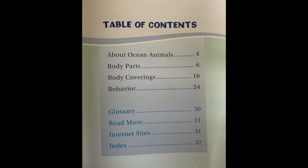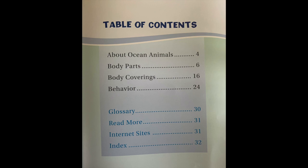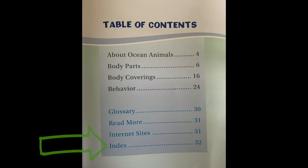The first topic is called About Ocean Animals, and you can find it on page four. Then the next part is Body Parts on page six. The next part is Body Coverings on page 16. And the last topic is called Behavior on page 24. And look boys and girls, I see other non-fiction text features — there's a glossary on page 30 and an index on page 32.